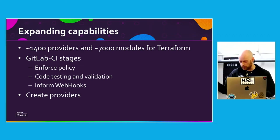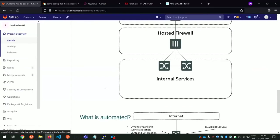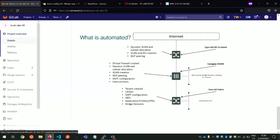So what does this all look like? We'll have a short demo. Here's the lab setup, a high-level diagram. We have an Internet Gateway, a hosted firewall, and our internal services which is going to be our ACI fabric. What we're actually going to automate today: the Internet Gateway is a Cisco iOS XE layer 3 switch, the firewall is a FortiGate VDOM, and everything else is within the Cisco ACI fabric.